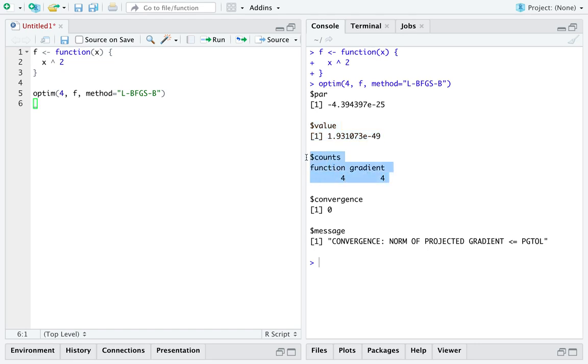The element named counts is how many steps it took us to get from the starting value 4 to the minimum value 0. Convergence is an indicator that tells us whether or not everything worked appropriately on the computer. We always want convergence to be zero. If convergence is not zero, there will be some kind of warning in the message element.